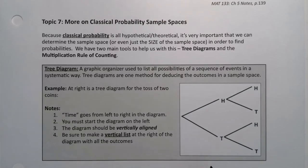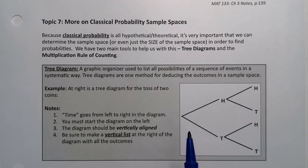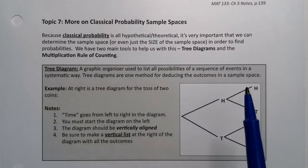Now, a tree diagram is a graphic organizer. It's used to list all the probabilities of the events in a systematic way. So tree diagrams are just one method for deducing the outcomes in a sample space.